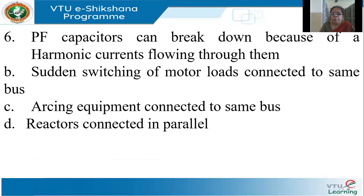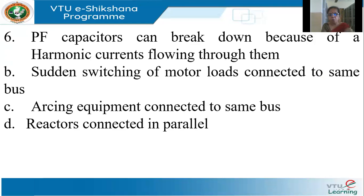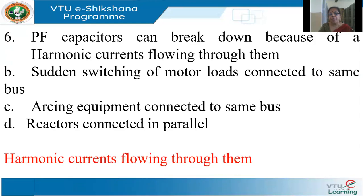PF capacitors break down because of harmonic currents, sudden switching of motor loads, arcing equipment, or reactors connected in parallel. PF capacitors are connected at many places to improve power factor. These capacitors provide a low impedance path for high frequency harmonic currents. So if a PF capacitor is installed near loads generating harmonic currents, the capacitors become vulnerable — acting as a sink for high frequency currents — and will break down. Harmonic currents are one of the main causes for the breakdown of PF capacitors.